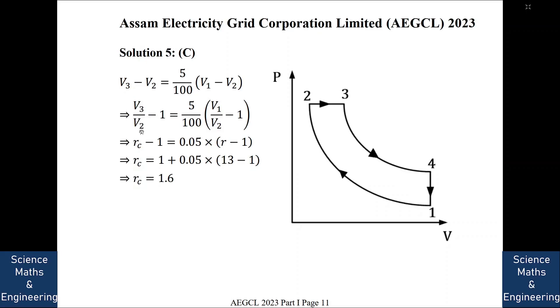So we know that is R, that is 13. And then V3 by V2, it is the cutoff ratio. So Rc minus 1 would be equal to 0.05 into R minus 1. So from here we get Rc is equal to 1.6. So we will go to the next question.